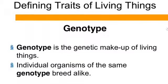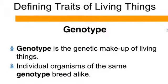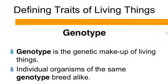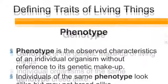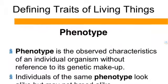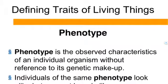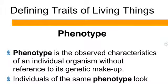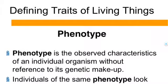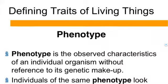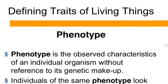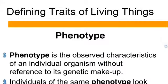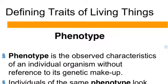Phenotype is actually what the animal looks like. It's the observed characteristics of an individual organism without reference to its genetic makeup — we just say the cow is black or the cow has horns. Individuals of the same phenotype look alike, but they may not breed alike. Sometimes we breed a black cow to a black cow and get a red offspring.